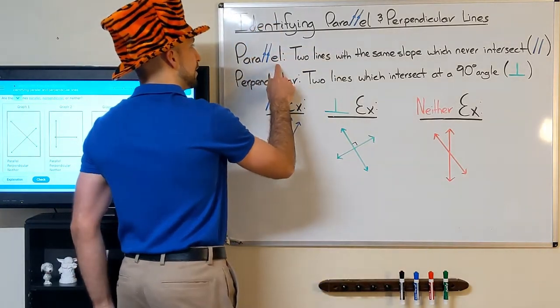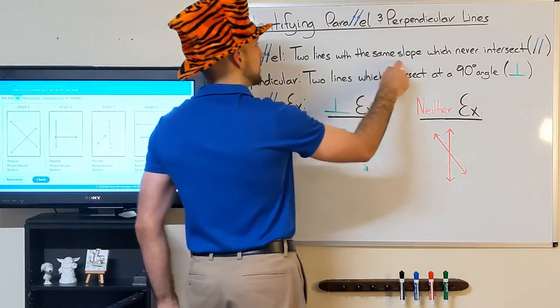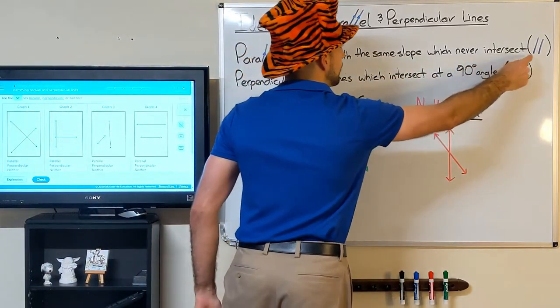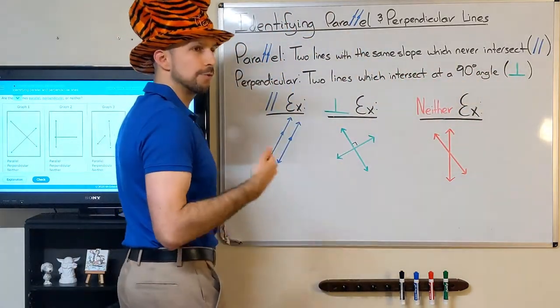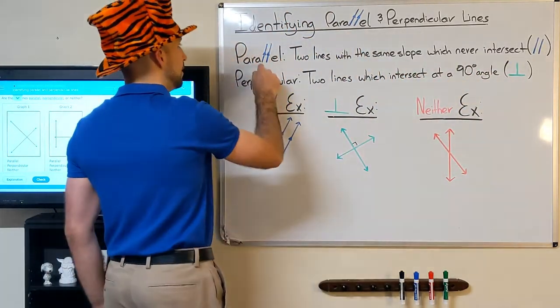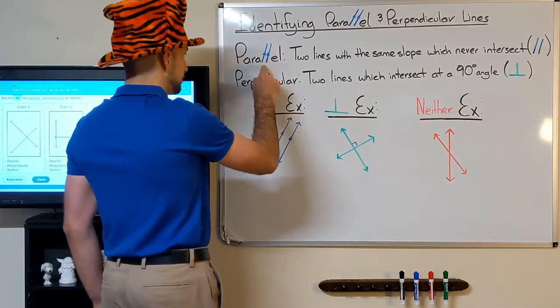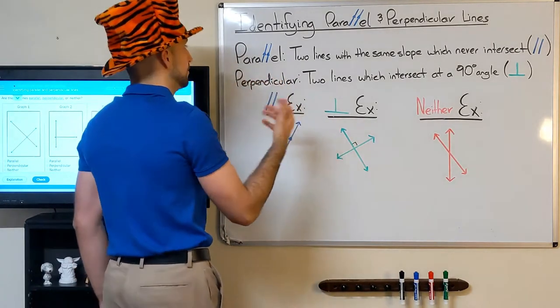Parallel lines, specifically, are two lines with the same slope which never intersect. You'll notice they have a symbol that looks like the two parallel lines I've written. Just to remind us that parallel lines never intersect, and they look exactly like the parallel symbol.